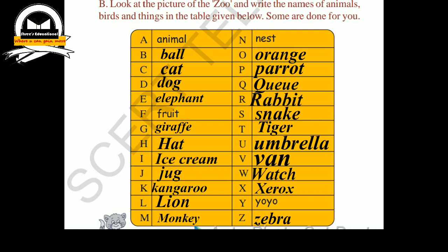Next, look at the picture of the zoo and read the names of the animals, birds, and things. Write them in the table given below in alphabetical order from A to Z. Some are done for you, and you have to fill in the rest. A for animal is already given.